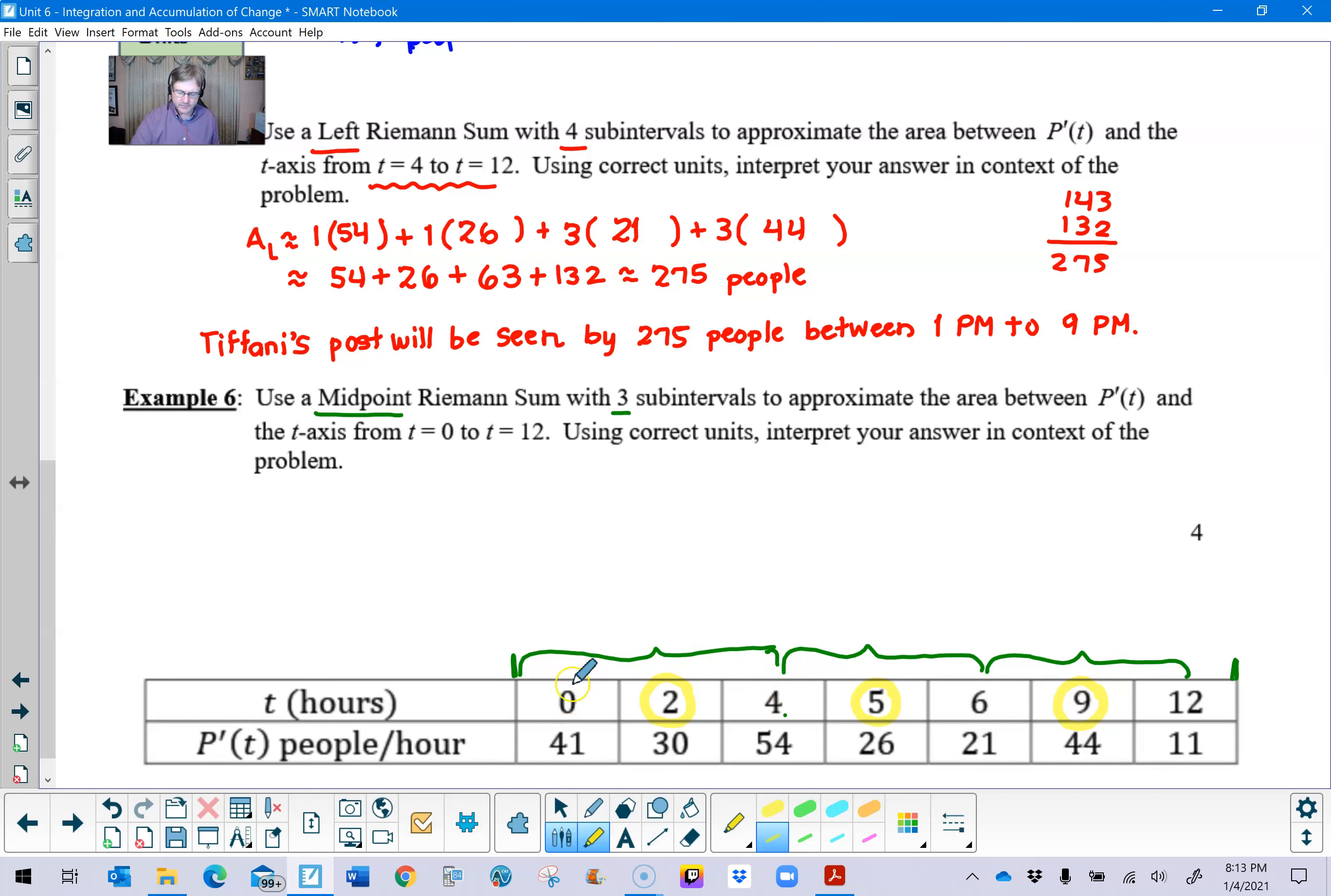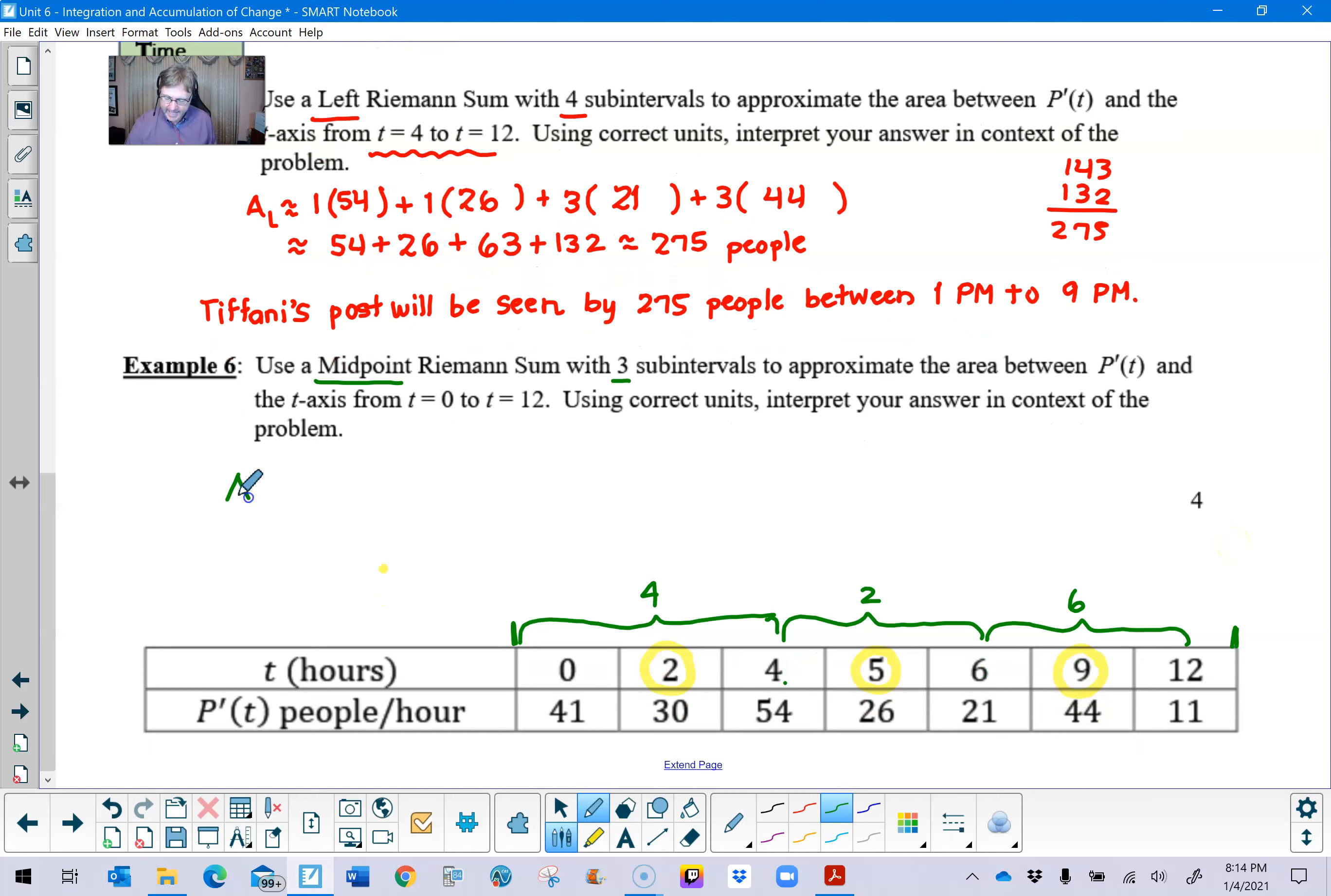0 to 4 are the endpoints of this first subinterval. 2 happens to be right in the middle. 4 and 6 are the endpoints of subinterval 2. 5 is right smack dab in the middle, and we can say the same thing about 9 in relation to 6 and 12. So what happens is that we can go ahead and find the width, and from 0 to 4 we have a width of 4, from 4 to 6 a width of 2, and from 6 to 12 a width of 6.